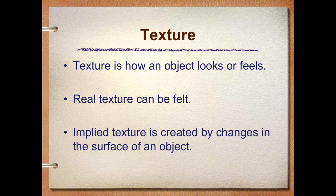Implied texture is created by the changes in the surface of an object, like when we take a photograph. When we take photographs, all of our texture would be considered implied. But if you actually feel a photograph, there is some real texture there — we can have a glossy finish or a matte finish, but we won't focus on that at this time. So we're going to assume that all of our implied texture is in our photographs, and we're taking photographs of real texture that become implied texture.